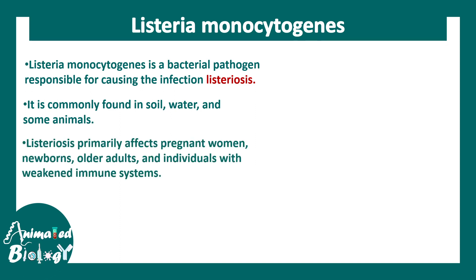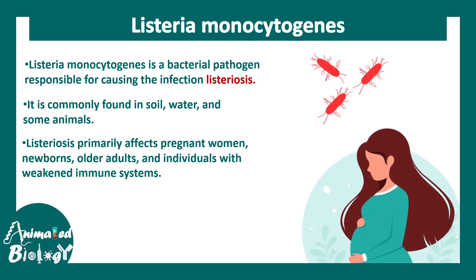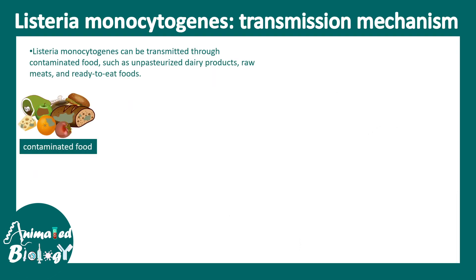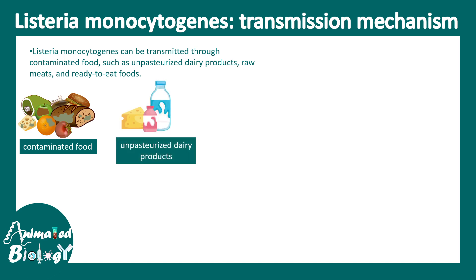Listeriosis primarily affects pregnant women, and the newborn can also get the infection from the mother during the time of birth. Listeria monocytogenes gets transmitted via several mechanisms: first via contaminated food, via unpasteurized dairy products, or from raw meat.